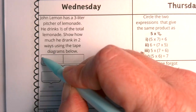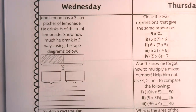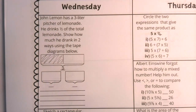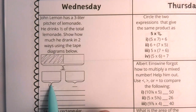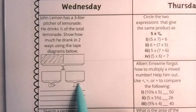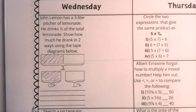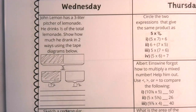He drank half of it, so here is one tape diagram that shows half of three. Now down below we have taken that three and we have broken it — we've partitioned it — and we've created two different tape diagrams from that. Three broken in half would be one and a half liters here and one and a half liters here. He still drank half of it, so we still would just shade half, but now it's clearly broken in two. We have shown the problem in two ways with two different diagrams.